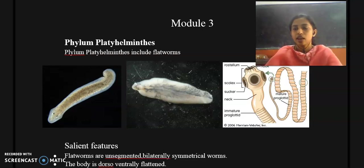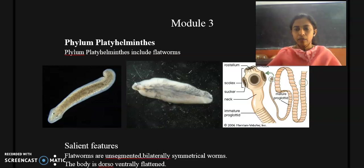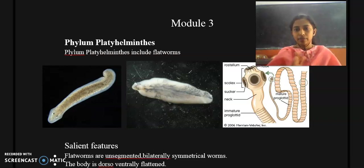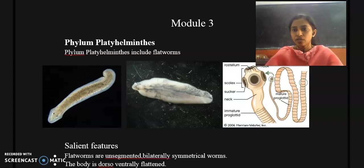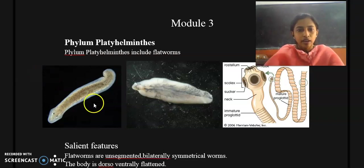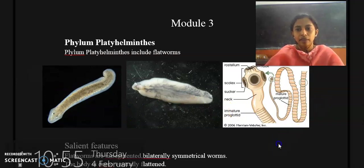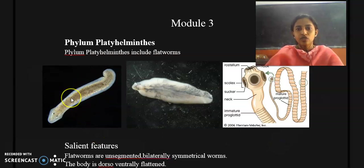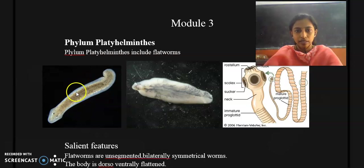The members of phylum Platyhelminthes are commonly known as flatworms. They are called so because their body is dorso-ventrally flattened — the body is completely flattened like an organism. All members of phylum Platyhelminthes are called flatworms because their dorsal-ventral surface is flattened. Here I have provided some diagrams showing members of this phylum, including a member of class Turbellaria.